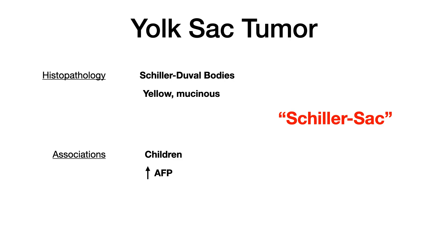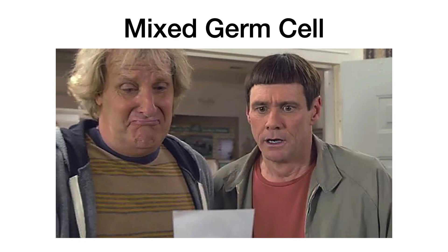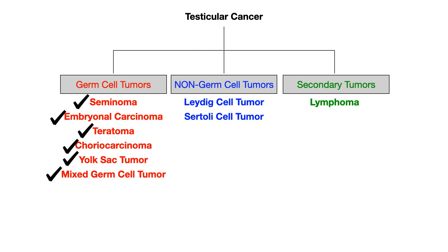Other associations for the yolk sac tumor: these are found in children, and if they give you lab abnormalities, look for increased AFP. The last germ cell tumor is the mixed germ cell tumor — just as the name implies, it has features of different types of germ cell tumors. It's probably not going to show up on your exam since the only thing to know is it has mixed features.